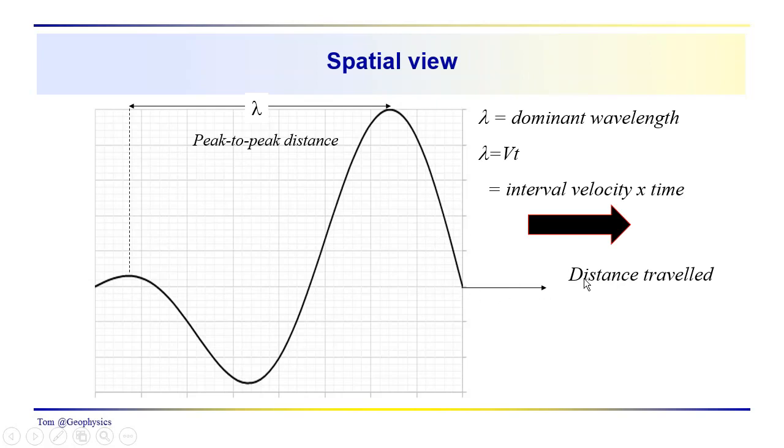Likewise, in a spatial view, this is a distance traveled here. The peak to peak distance. We can think of that as a dominant wavelength, with λ equal to the wave propagation velocity times the time. Interval velocity in a particular medium characterized by a specific interval velocity. That would be the velocity at which the mechanical disturbance travels. And so we're looking at the mechanical disturbance in space, which is basically a reversal of the mechanical disturbance in time.